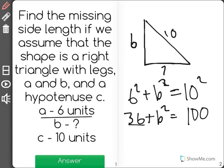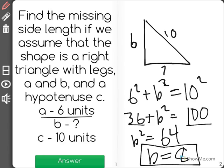Now I find the difference between 36 and 100, and I know B squared equals 64. So I think to myself, what number times itself equals 64, and I know that our missing side is 8, because 8 squared equals 64.